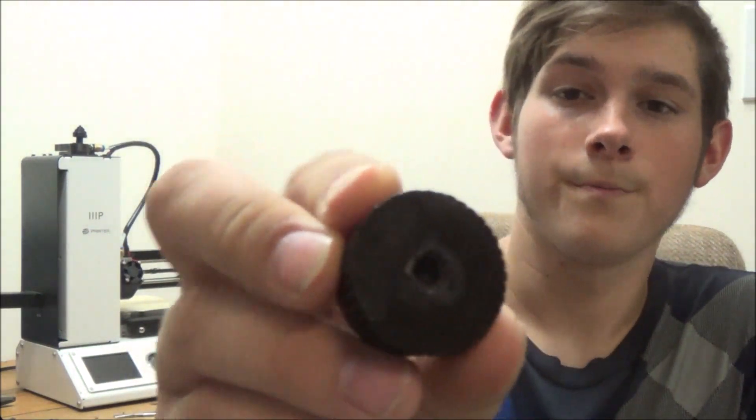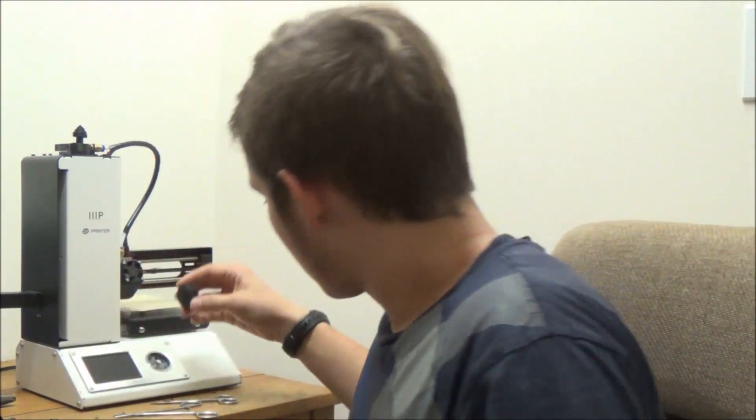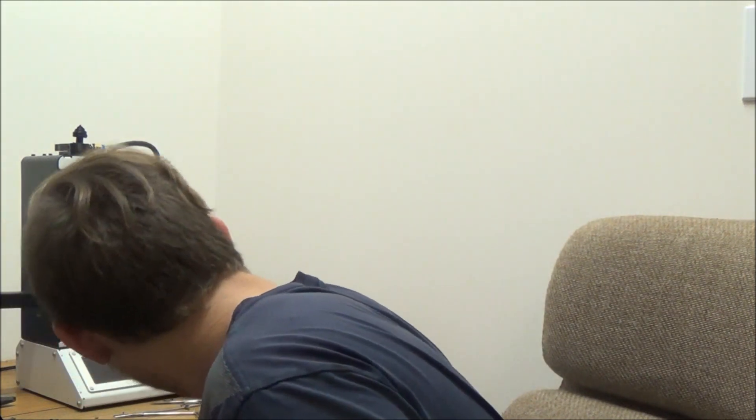And then I thought what if I just mix up some acetone and some shavings and stuff from old support and raft or brim material. So I did that, I mixed it up in a jar and then I poured it into the hole hopefully to fill in the space. So I'm seeing if it's gonna work.